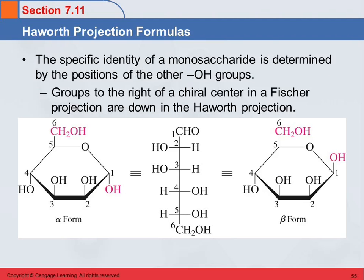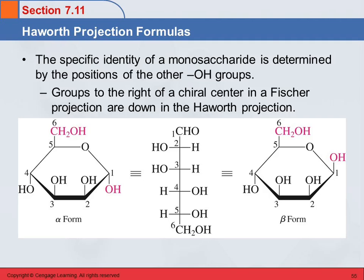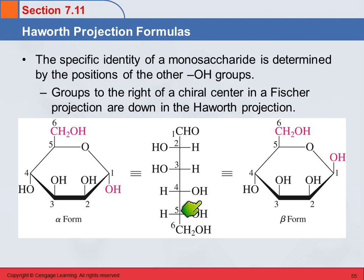We just kind of have to get used to looking at them this way. This is the D isomer because the CH2OH is sticking up. This would be the alpha form, because the hydroxyl is down — opposite of that CH2OH group. Specifically which monosaccharide you have — glucose, fructose, or whatever — is going to depend on the specific orientation of the other hydroxyl groups.